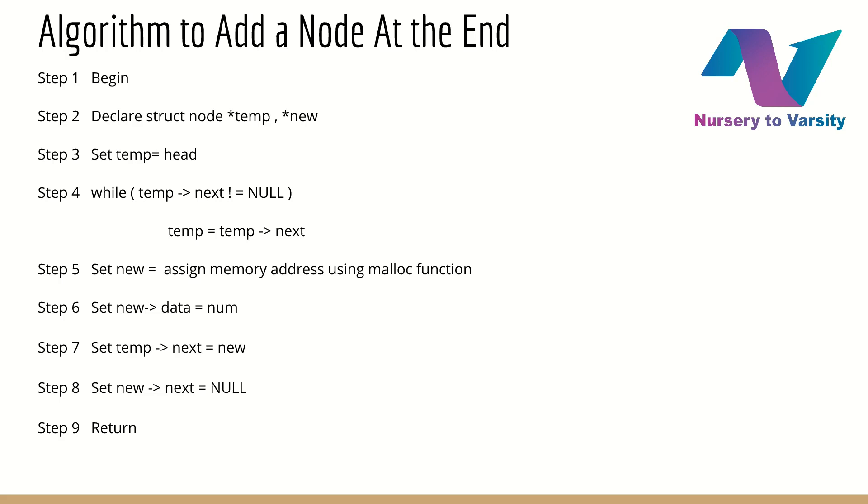And the last step is, or we can say second last step, make sure that last node should contain null in next point apart. So, do, new arrow next equal to null. And then return, and this is the step 9.